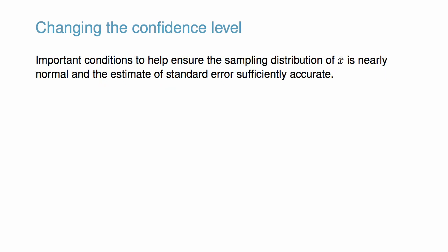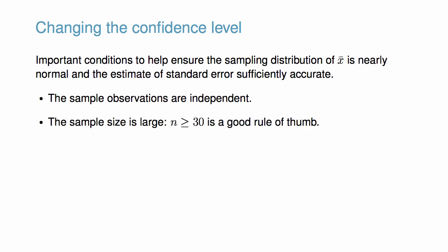Throughout our discussion of confidence intervals, we have been relying on a few important conditions to ensure the sampling distribution of the sample average is nearly normal and the estimate of the standard error is sufficiently accurate. First, we require the sample observations to be independent. Usually subjects are considered independent if they undergo random assignment in an experiment, or if they are obtained by a simple random sample consisting of less than 10% of the population. Second, we require that the sample size is large. 30 is often used as a rule of thumb. Finally, it is important that the distribution of sample observations is not strongly skewed.